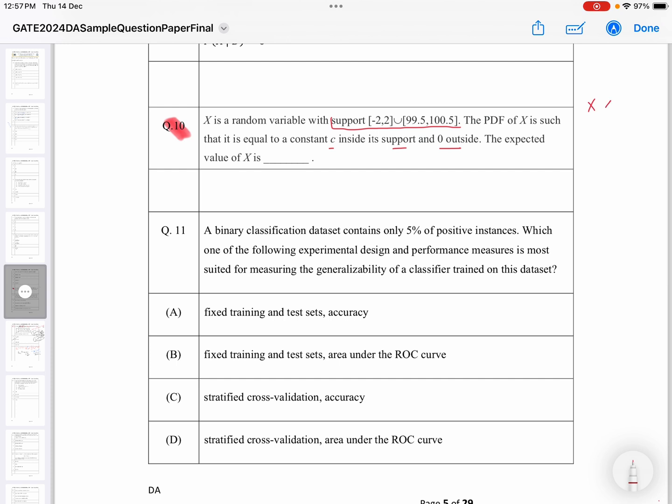So this support is what the random variable can take as values. If the random variable is less than or equal to X, what does it mean? That the random variable can have a value equal to X or less than X. Here the support is given - that means the random variable can take only these intervals and no other values.